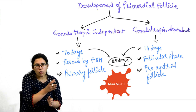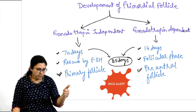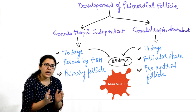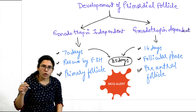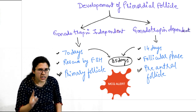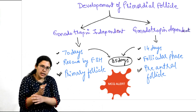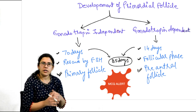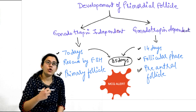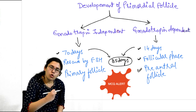These primordial follicles undergo a 70-day stage of development which is gonadotropin independent, and after this they are ready to be acted upon — or rescued — by FSH. Among the two gonadotropins, it is FSH which is responsible for folliculogenesis, not LH. Those primordial follicles which have completed these 70 days are ready to be rescued by FSH.